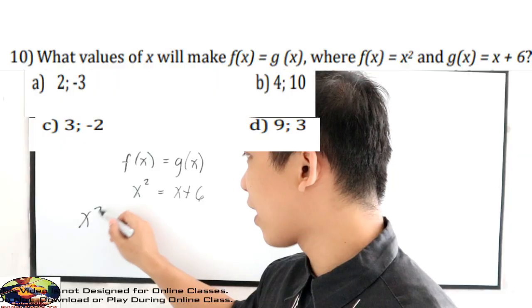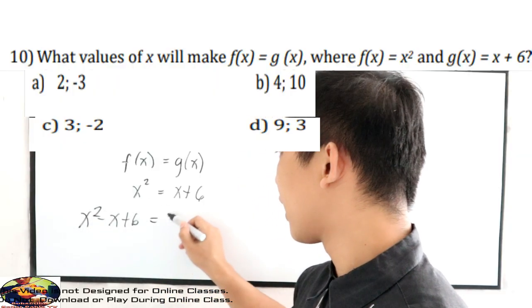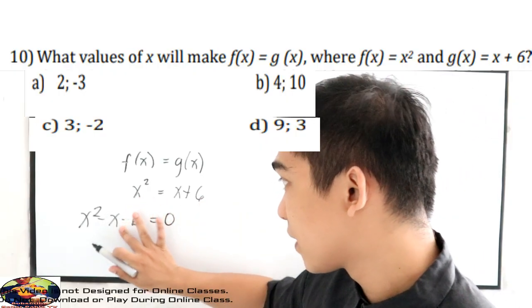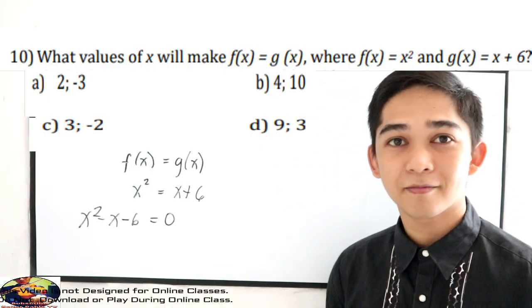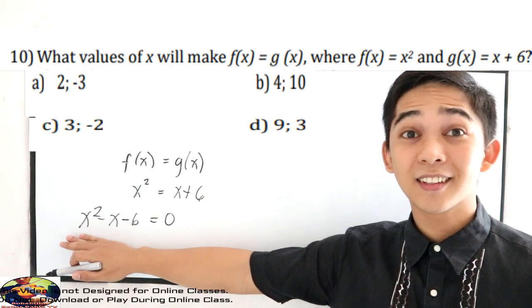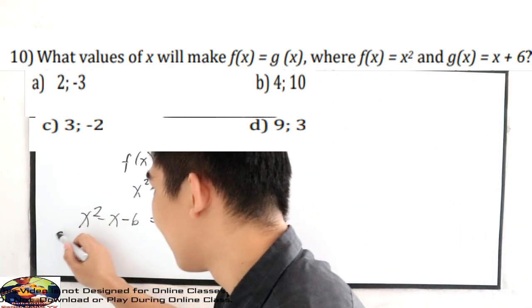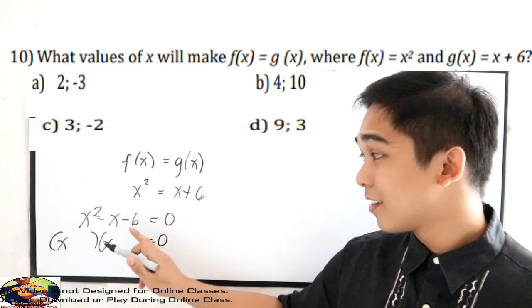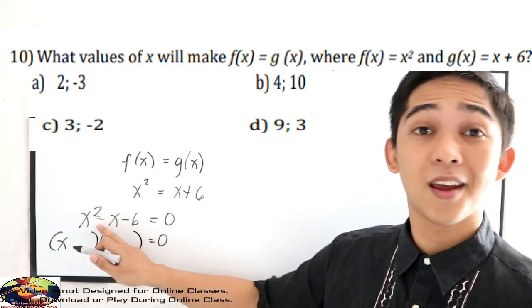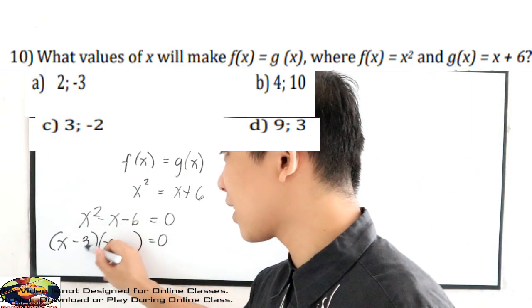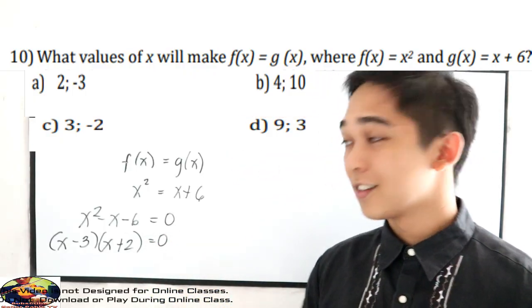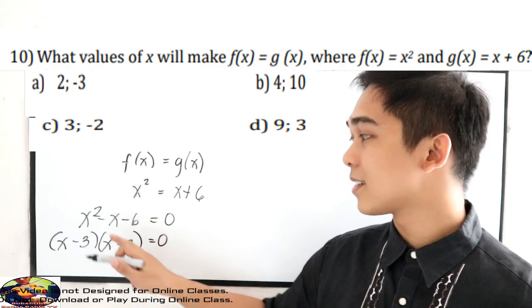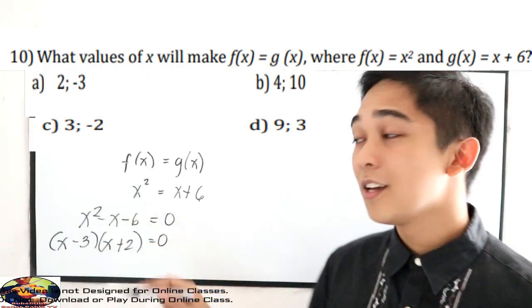This will make a quadratic equation. Equate to 0: x will become negative x, and positive 6 will become negative 6. Now let us factor out. The factors are x and x. Factors of negative 6 whose sum must be negative 1: that is negative 3 and positive 2. Negative 3 times positive 2 is negative 6, and negative 3 plus 2 is negative 1. Equate to 0.